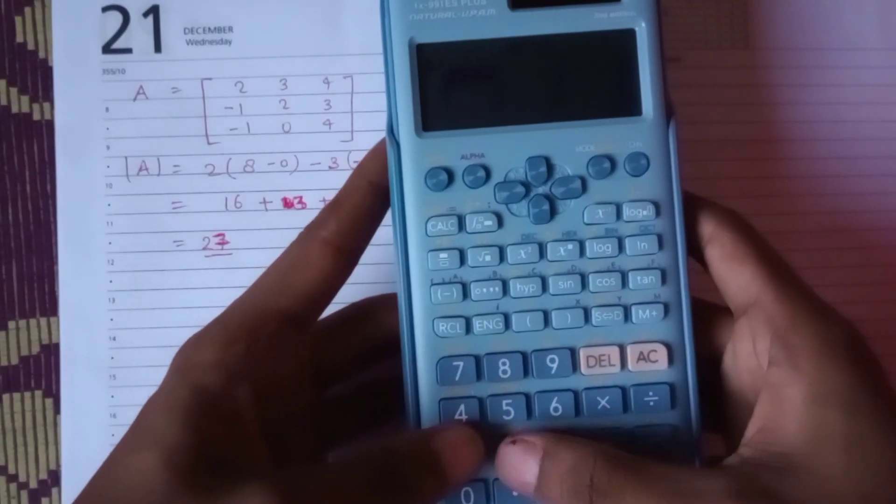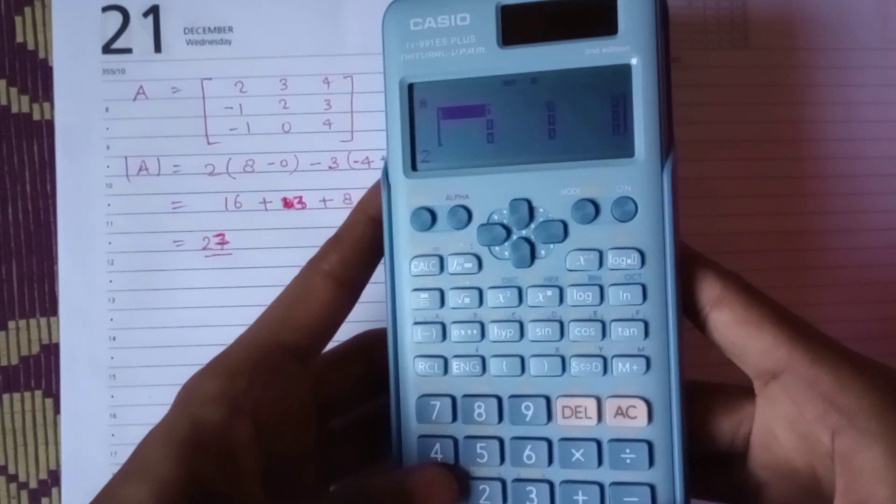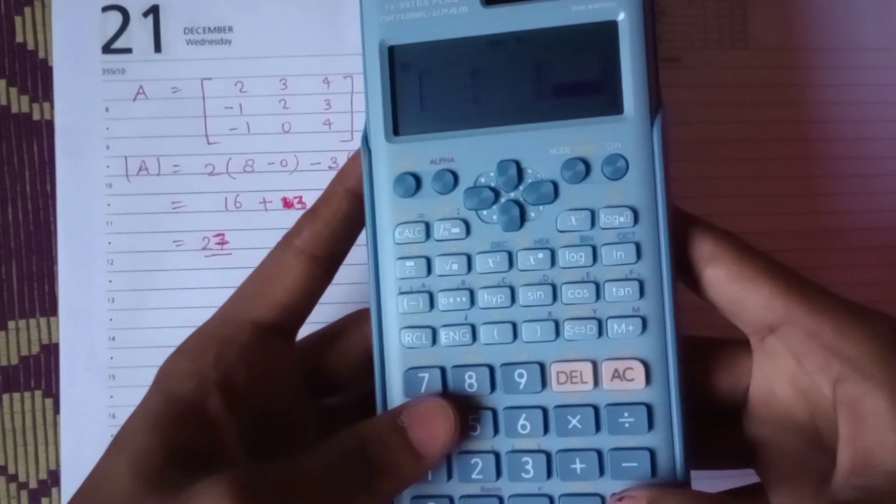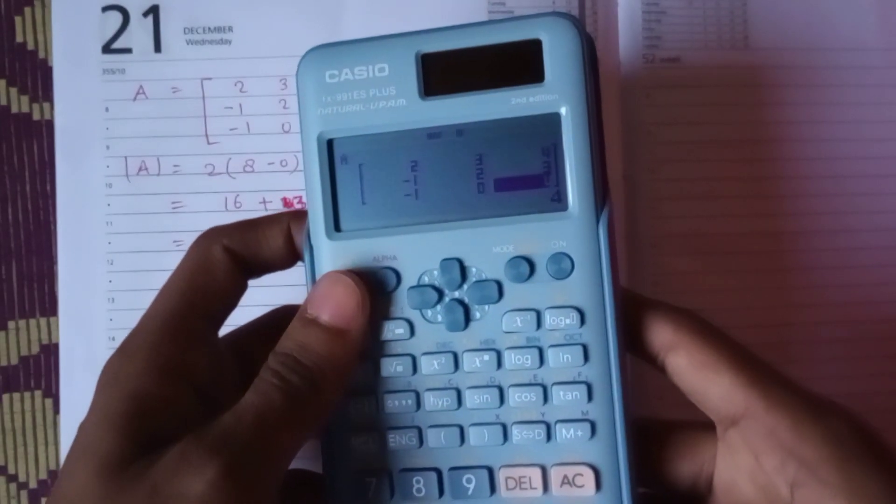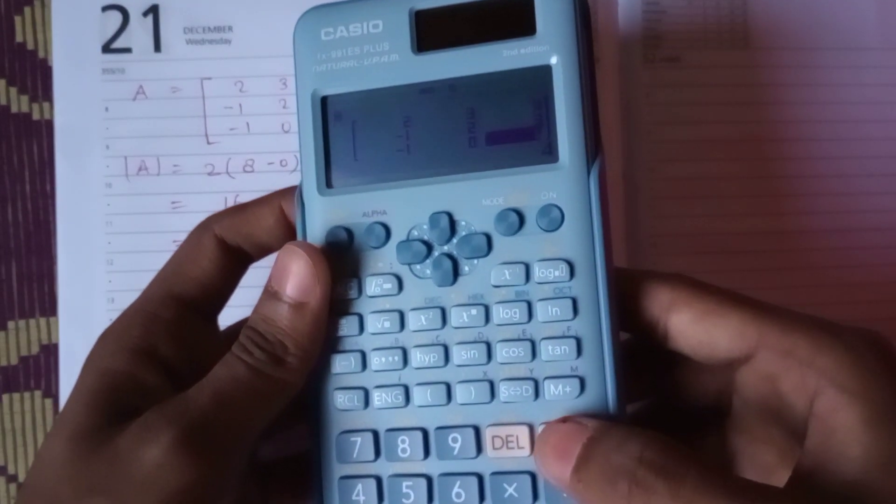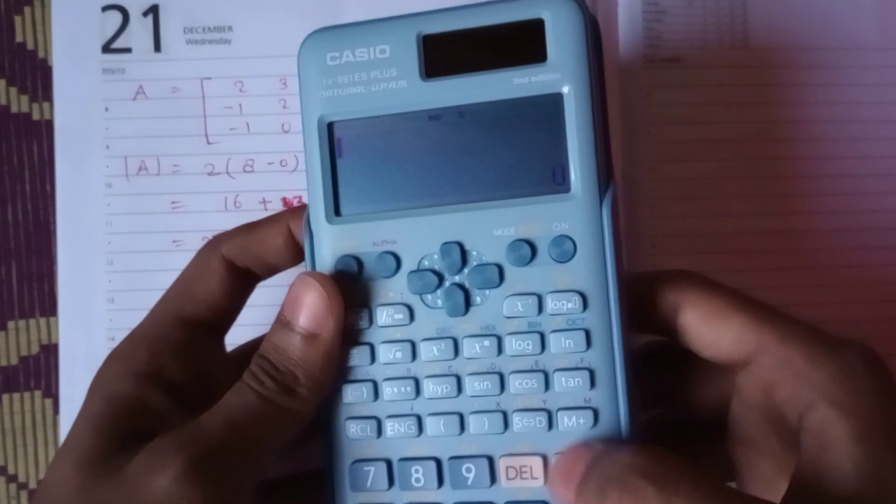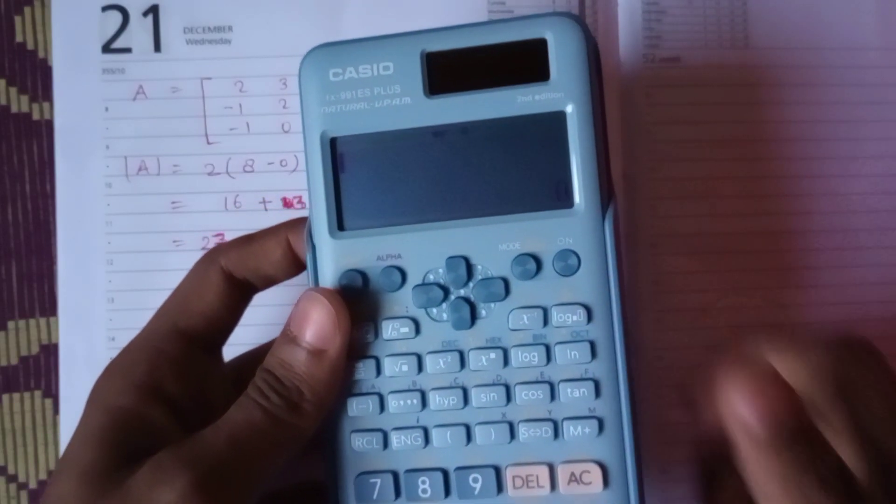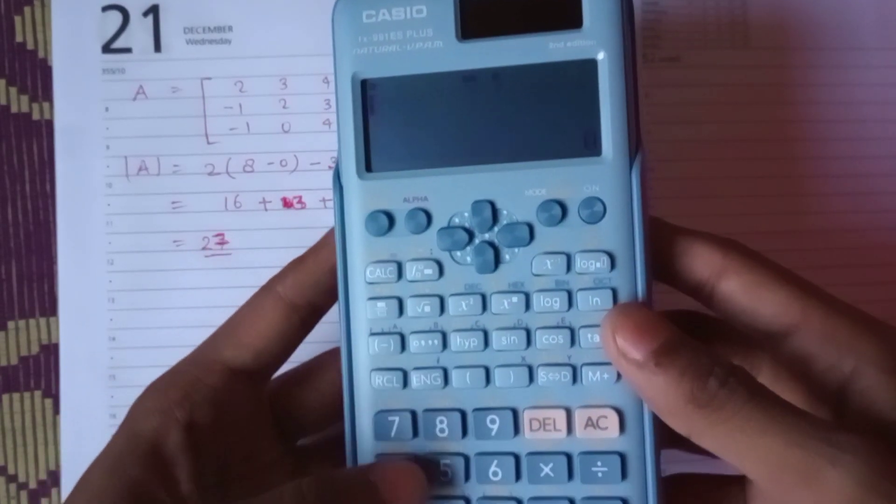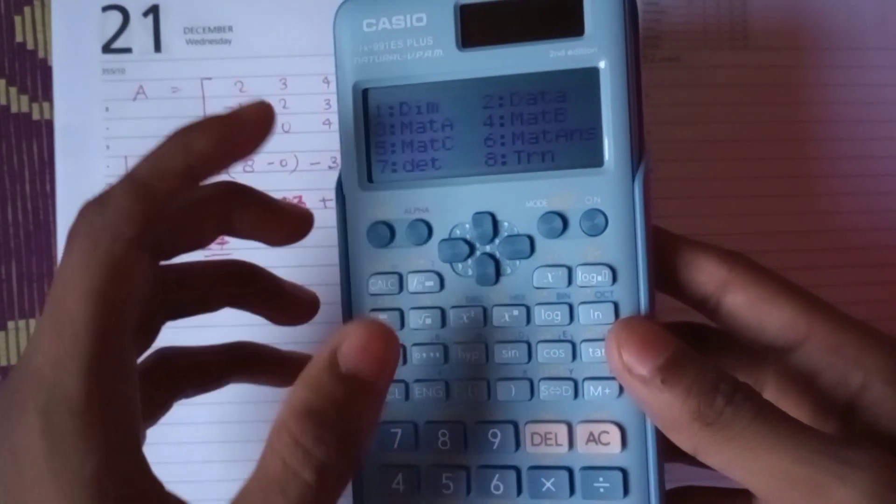Now I have put all the values in the calculator. Just press All Clear, that is AC, and you have a clear background. Now you have to press Shift 4 to unlock the matrix mode.